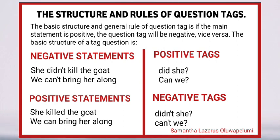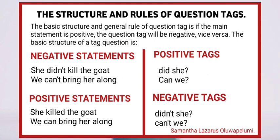Example of negative statements taking the positive tags: 'She didn't kill the goats. Did she?' The negative statement here is 'she didn't kill the goats,' so it is taking the positive tag 'Did she?' The second example: 'We can't bring it along. Can we?' These two statements are negative and they are taking the positive tags. So a negative statement must take a positive tag.